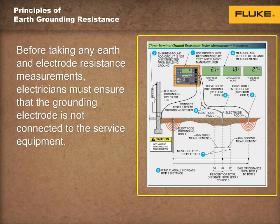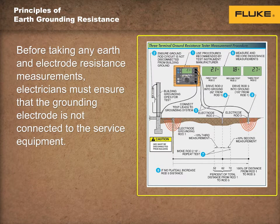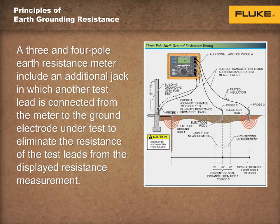A 3-pole ground resistance meter is a common meter used to test grounding systems. This method is very reliable, accurate, and can be used on any size grounding system, as shown on the screen. 4-pole test measurements are suitable for most applications for measuring the resistance of a grounding system in order to meet the minimum resistance requirement listed by codes, typically 25 ohms for a rod, pipe, and plate electrodes, provided the test instrument leads and connections are acceptable.